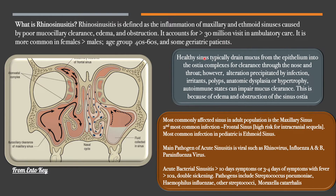Healthy sinuses typically drain mucous from the epithelium into the osteocomplexes for clearance. The diagram on the left demonstrates a patent osteocomplex. Here is an obstructed sinus — there's edema, obstruction, and there's not a free flow or drainage or clearance of the mucus.